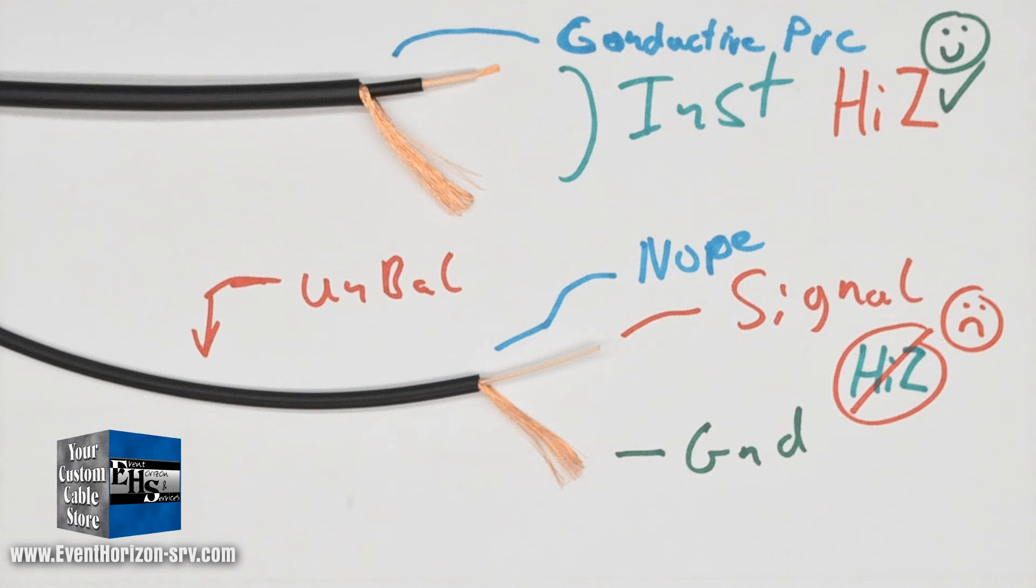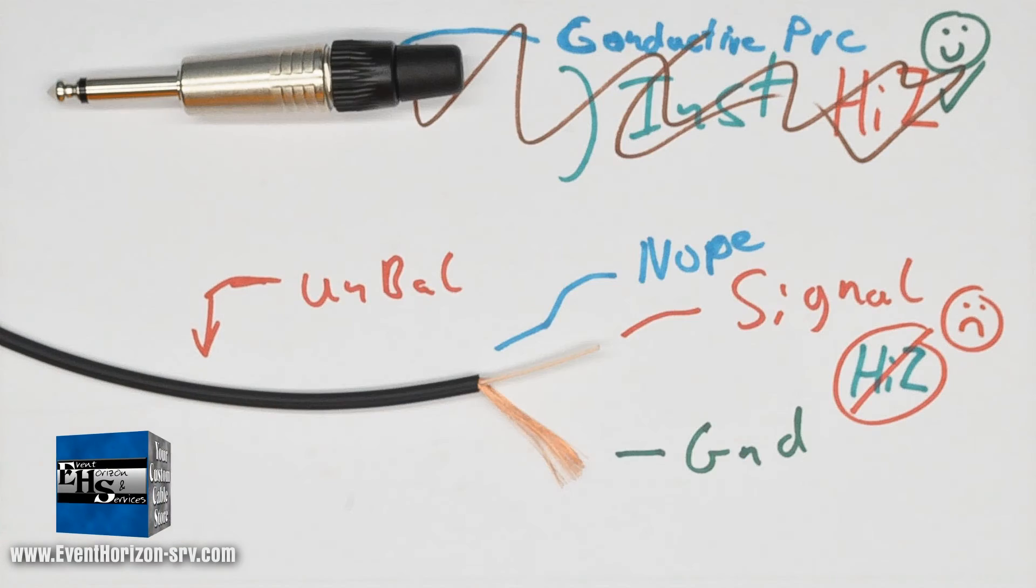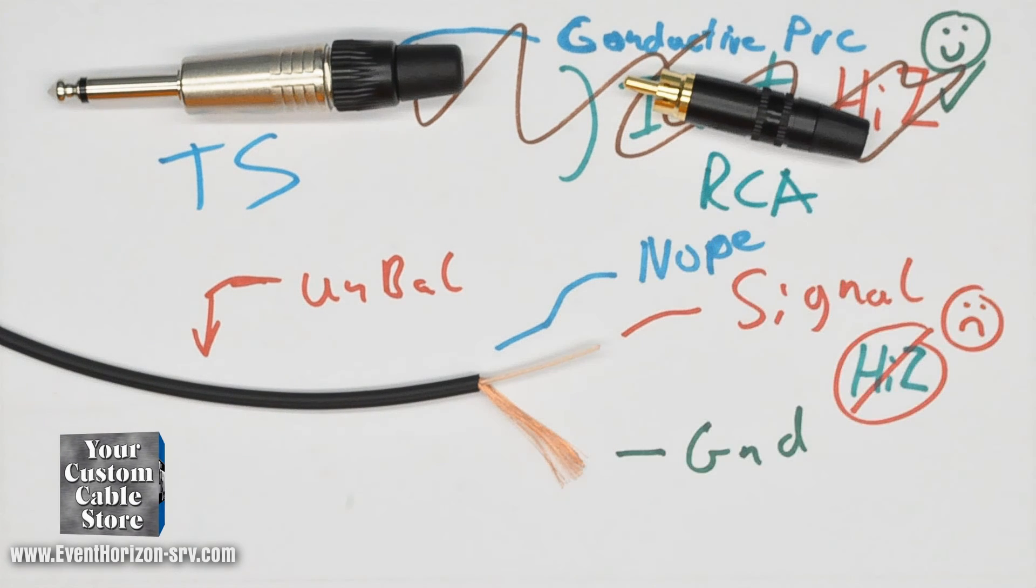stereo connections, unbalanced mic connections, and more. The center conductor carries a signal and the shield is a signal ground. You'll commonly find this cable terminated with TS quarter inch connectors and RCA connectors.